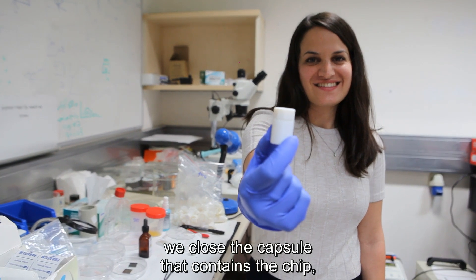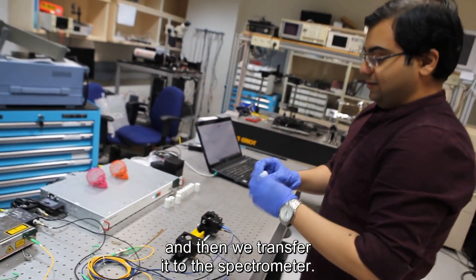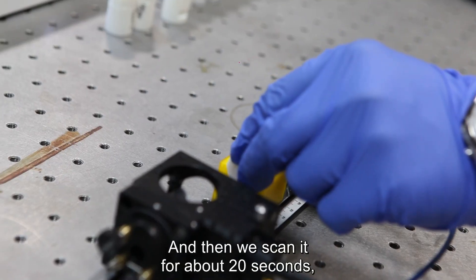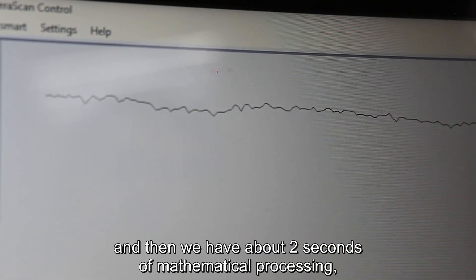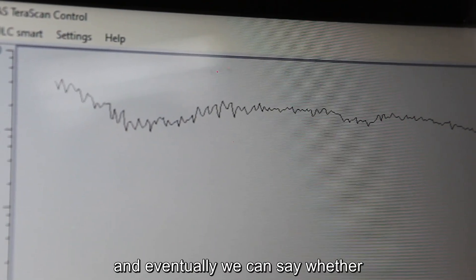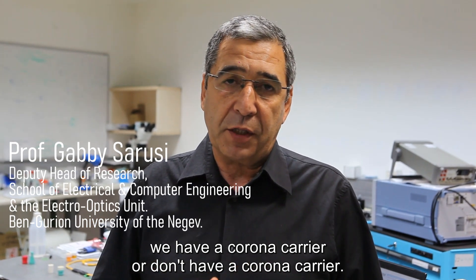We close the capsule that contains the chip and then we transfer it to the spectrometer and then we scan it for about 20 seconds and then we have about two seconds of mathematical processing. Eventually we can say whether we have a corona carrier or we don't have a corona carrier.